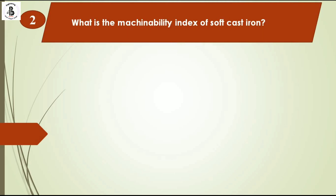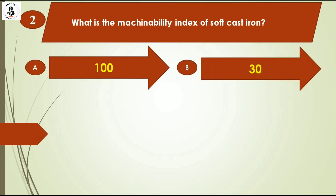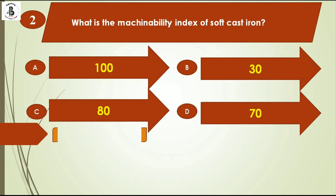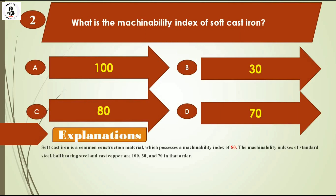Second question: what is the machinability index of soft cast iron? Option A 100, option B 30, option C 80, option D 70. Soft cast iron is a common constructional material which possesses a machinability index around 80. The machinability index of standard steels, ball bearing steels, and cast copper are 100, 30, and 70 respectively. So the right answer is option C.